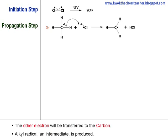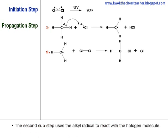Whereas the other electrons from the C-H bond will be transferred to the carbon atom so that we can produce the alkyl radical, which is also the intermediate. The second sub-step will use the intermediate, the alkyl radical, to react with the halogen molecule.